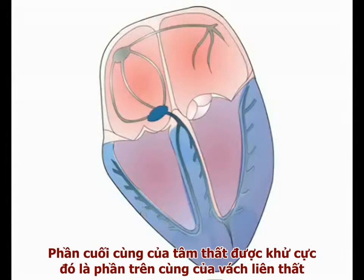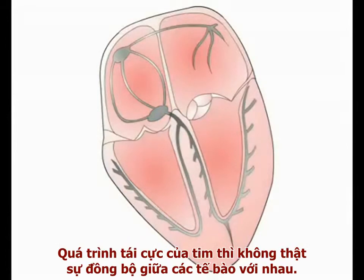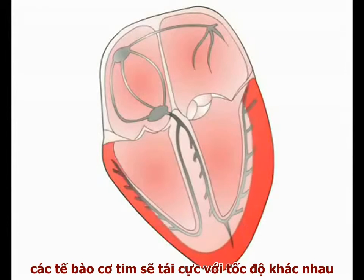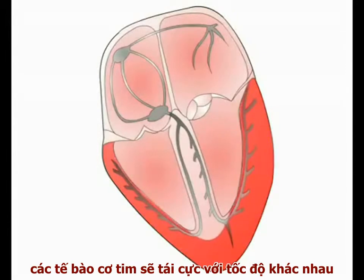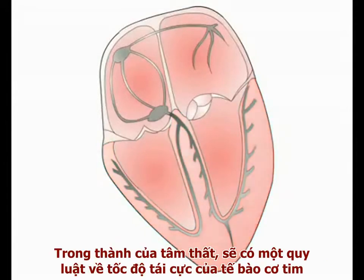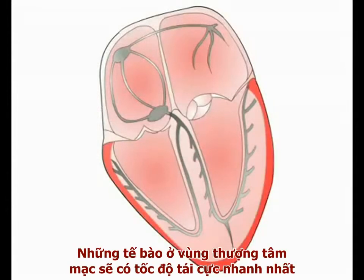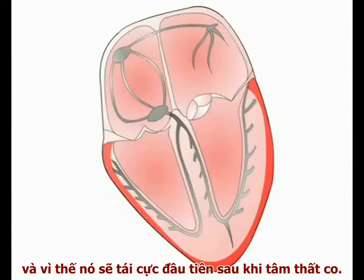The final piece of muscle to depolarize is the upper part of the interventricular septum, and again this occurs by movement of current from left to right. Cardiac repolarization is not truly propagated between cells. However, cardiac myocytes repolarize at different rates depending on their anatomical location within the heart. Within the ventricular wall, there is a gradient in the rate of cellular repolarization. Cells in the epicardial region have the fastest rate of repolarization, and repolarize first following ventricular contraction.